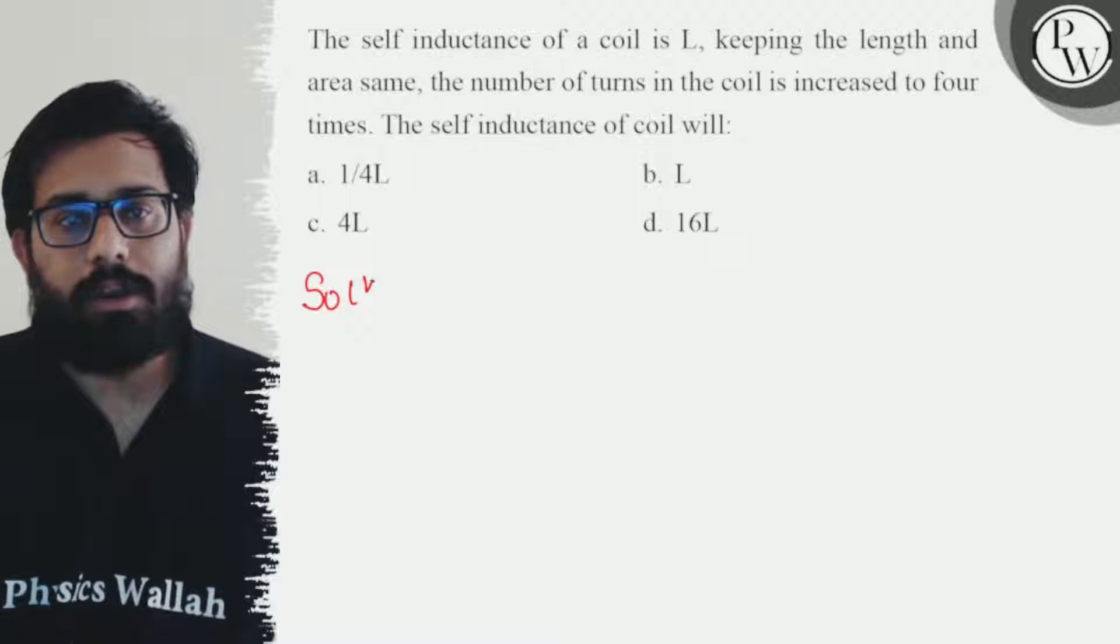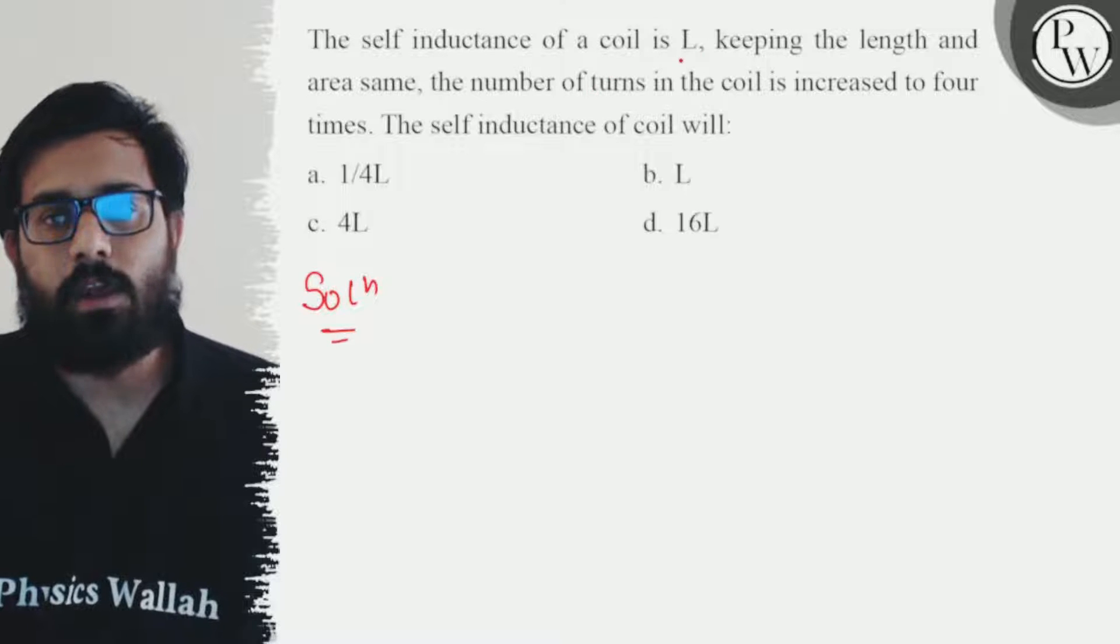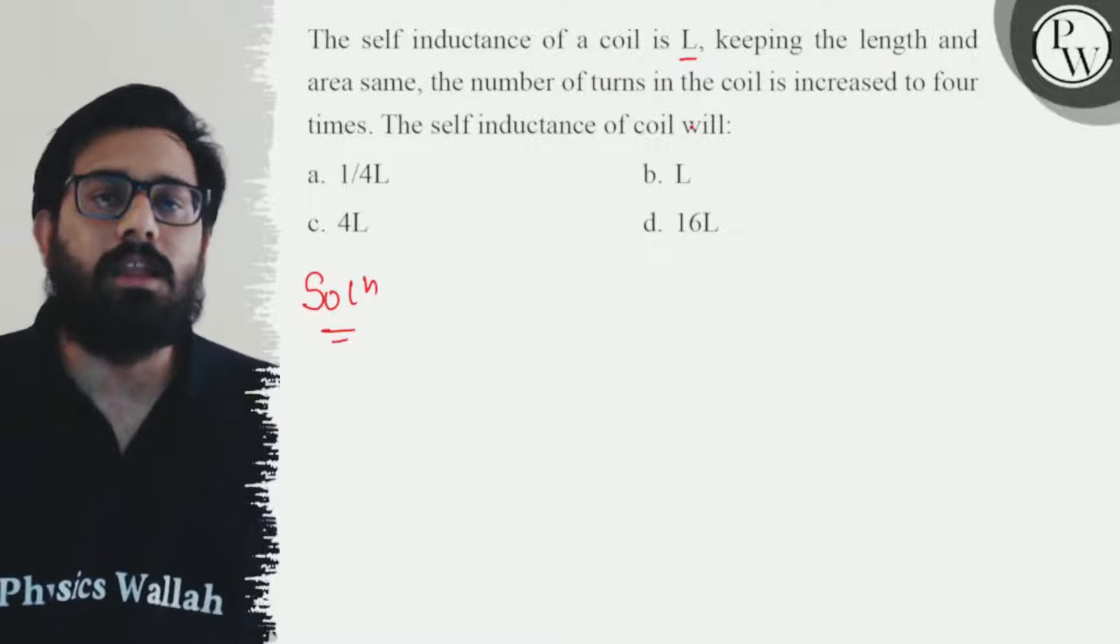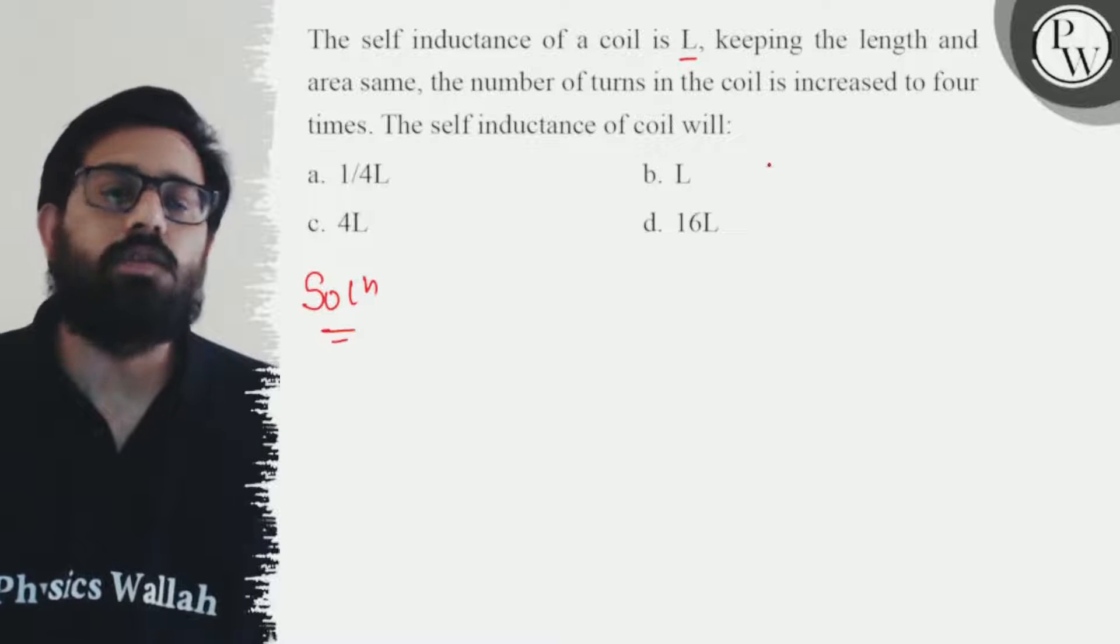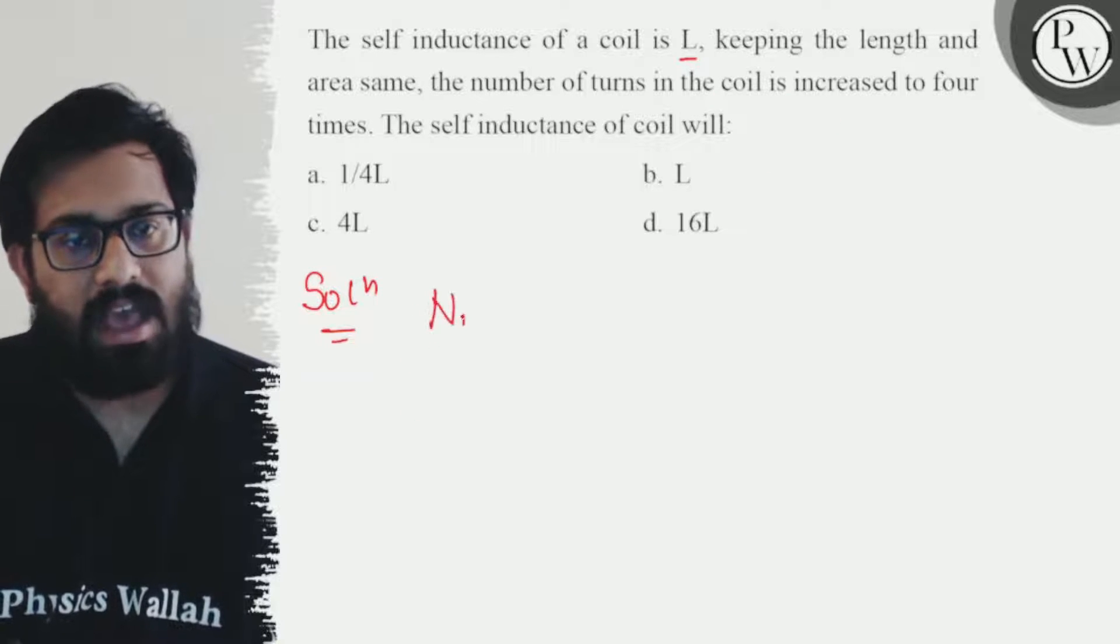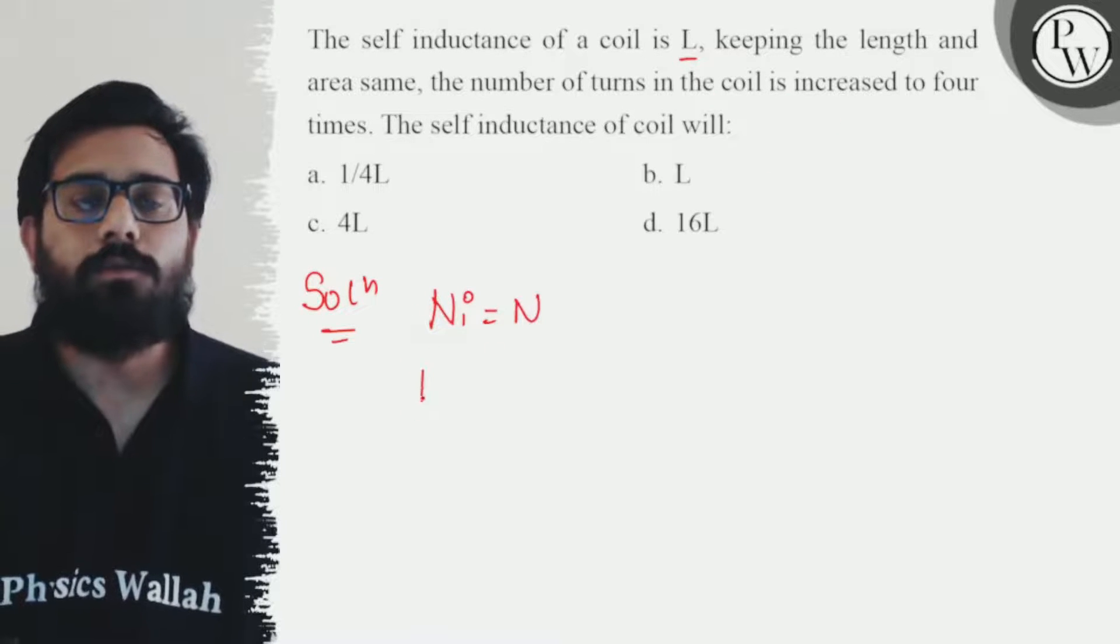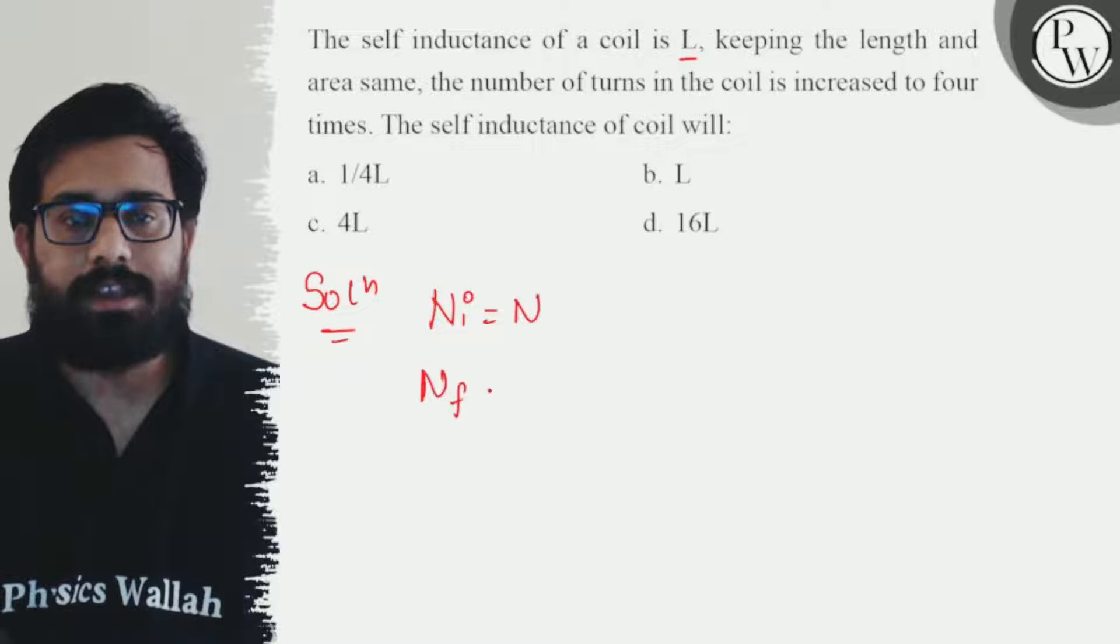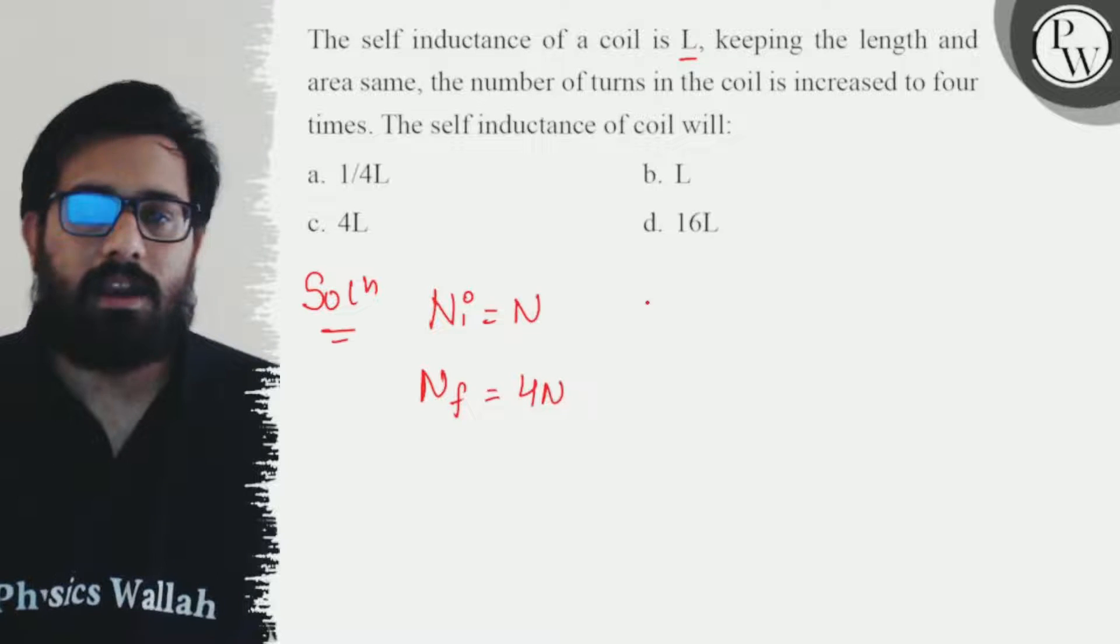So here in this question, it is given that we have a self inductance of the coil as L. Keeping the length and the area same, the number of turns in the coil is increased to 4 times. So initially if we have N number of turns, the final number of turns 4N.